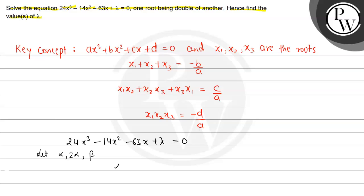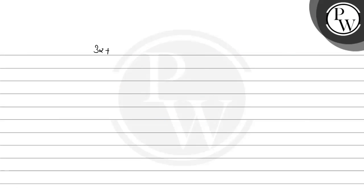Then, the sum of the roots: α plus 2α plus β equals 14 divided by 24. Simplifying, 3α plus β equals 7 divided by 12. Consider this as equation 1.